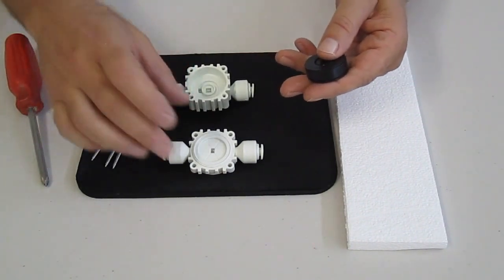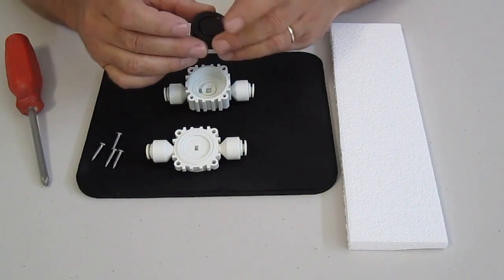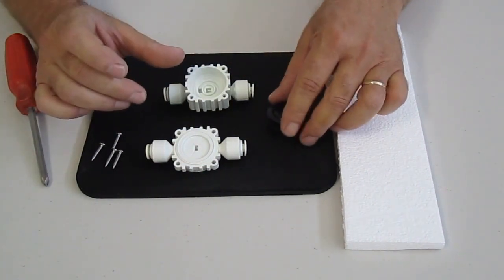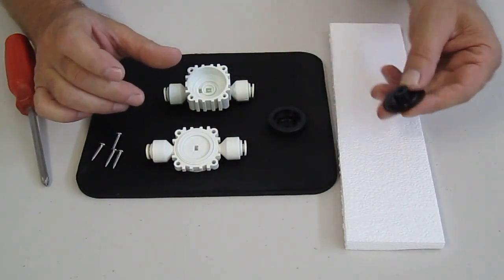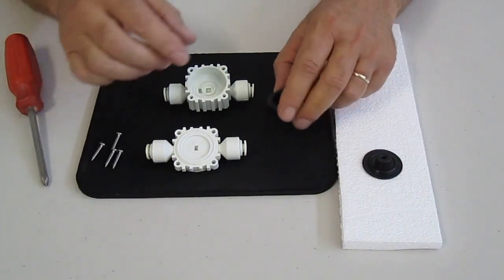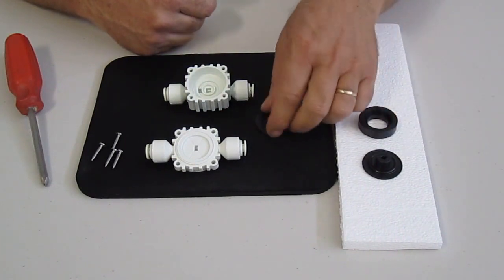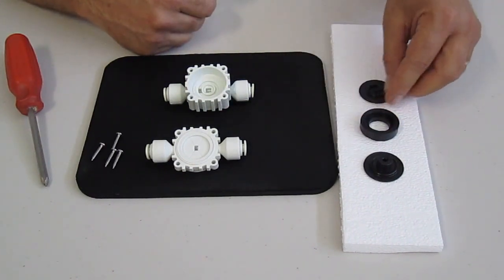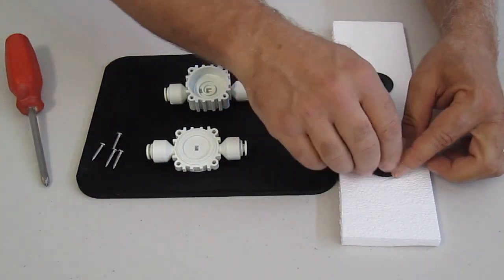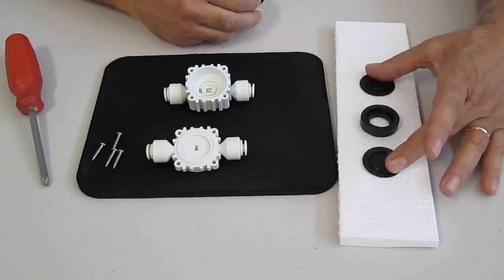We're going to leave the valve just the way I took it apart. So if you notice, you're going to have a diaphragm on the top. You're going to have the center piece. Then you're also going to have another diaphragm. So you have a total of two outer diaphragms.